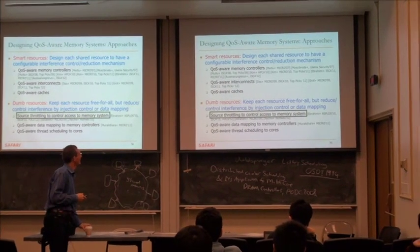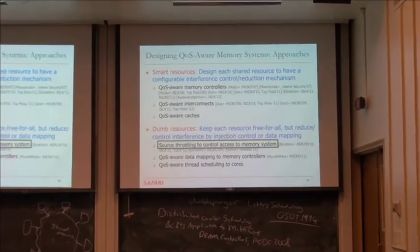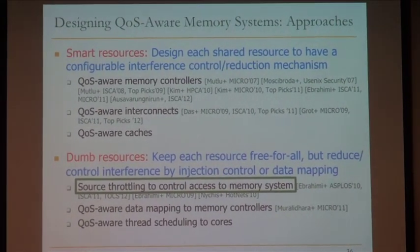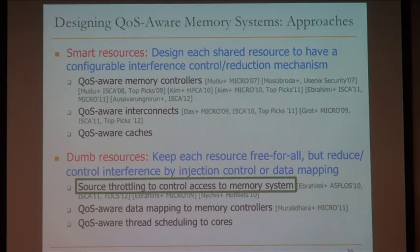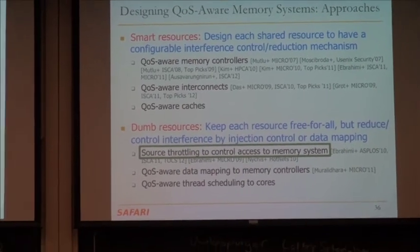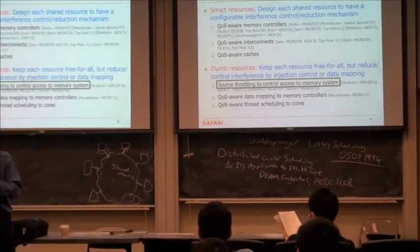I think I'll stop here since we've already covered one hour. Next time we'll pick up with source throttling and cover some of the other approaches to designing a more fair memory system. If you get a chance to read the paper before then, even though the deadline is later, that would be good so you can ask more questions. See you Wednesday.